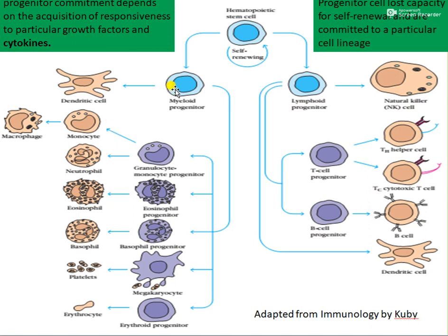The myeloid progenitor can either give rise to dendritic cells or to different cell types like monocytes, neutrophils, eosinophils, basophils, platelets, RBC, and macrophages. Different cells are thus being formed from the hematopoietic stem cells.